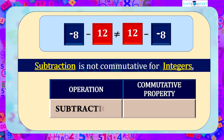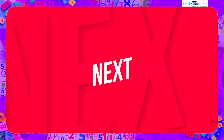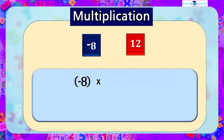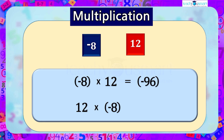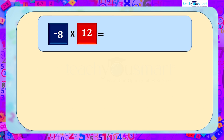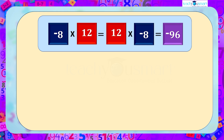Next, let's look at multiplication of integers. On multiplying minus 8 and 12, we get minus 96, and 12 multiplied by minus 8 is also equal to minus 96. Here, changing the order of numbers does not affect the result. That is, minus 8 multiplied by 12 equals 12 multiplied by minus 8, equal to minus 96.